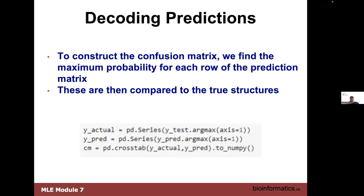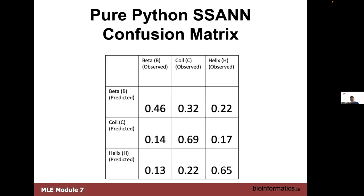When we wrote the original pure Python secondary structure prediction neural net, this is the confusion matrix we got — it's not like what we saw in the Irises, which was perfect. Beta sheet prediction was 69%, coil prediction 65%, helix prediction 46%, with an overall average around 61 or 62%. The best secondary structure prediction programs hover around 70-75%, although now with AlphaFold it's around 95%. In the old days, this was pretty good but not great — because we haven't used encoding functions or features — just to give a little context about overall performance.